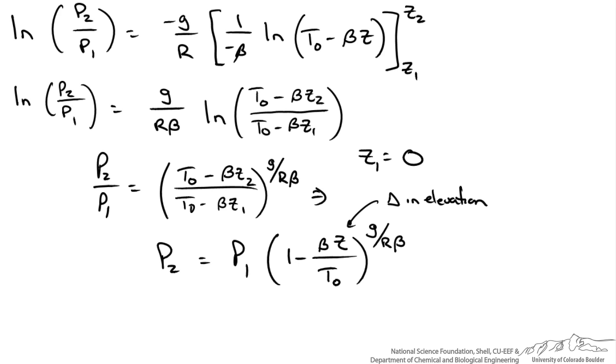So now we have represented our change in elevation as just Z. Remember beta is our lapse rate, T0 is our sea level temperature, G is our gravitational constant, R is our gas constant. Now we have a relationship for a compressible fluid in a non-isothermal case.